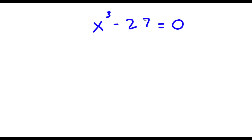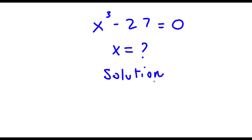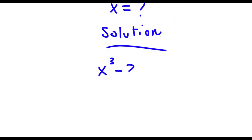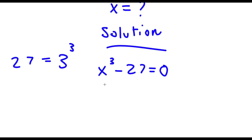Alright, so I have x to the power of 3 minus 27 is equal to 0. Now, I'm trying to find the value of x here. So for my solution, I first start with x³ minus 27 equals 0. Now, 27 is the same thing as 3 to the power of 3. So if I substitute in 3³ for 27, I get x³ minus 3³ is equal to 0.